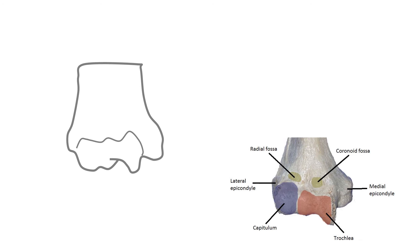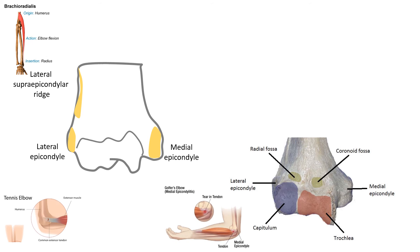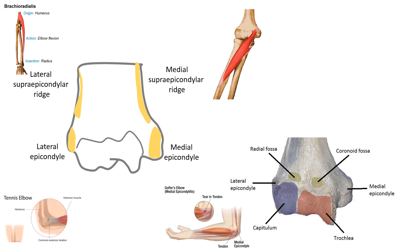This is the distal humerus. The lateral epicondyle is the common extensor origin and gives attachment to the radial collateral ligament. The lateral supraepicondylar ridge provides attachment to two muscles: the upper two-thirds to brachioradialis and the lower one-third to extensor carpi radialis longus. The medial epicondyle is relatively larger and is the common flexor origin; the ulnar nerve passes posterior to it, and it also provides attachment to the ulnar collateral ligament. The medial supraepicondylar ridge provides attachment to pronator teres and triceps.